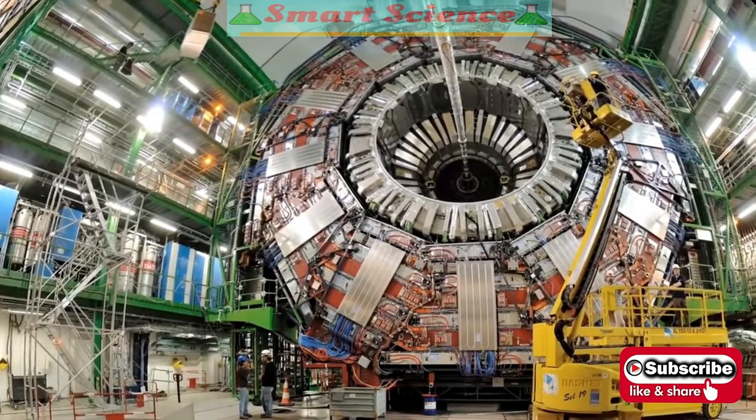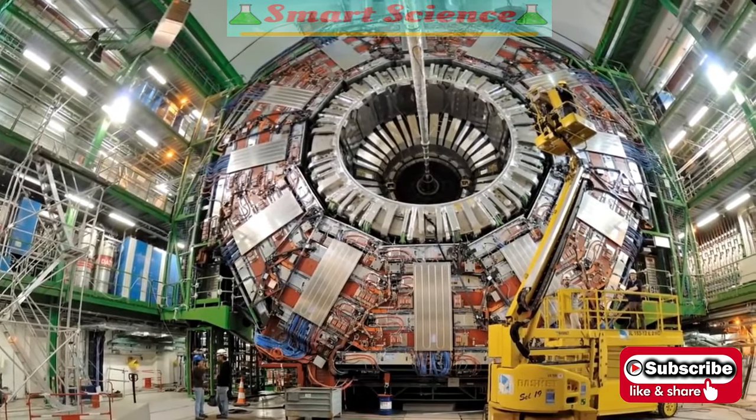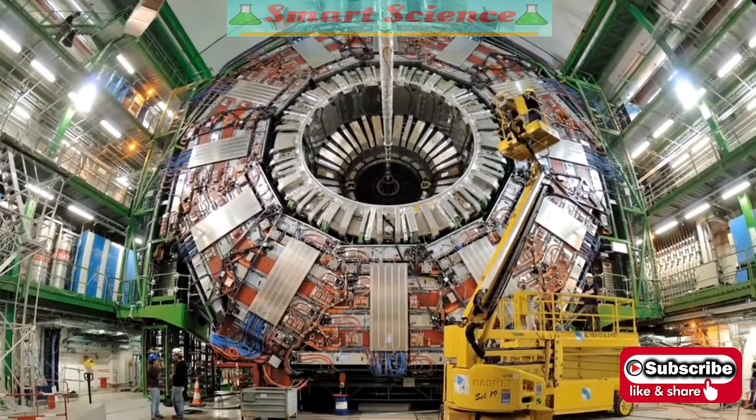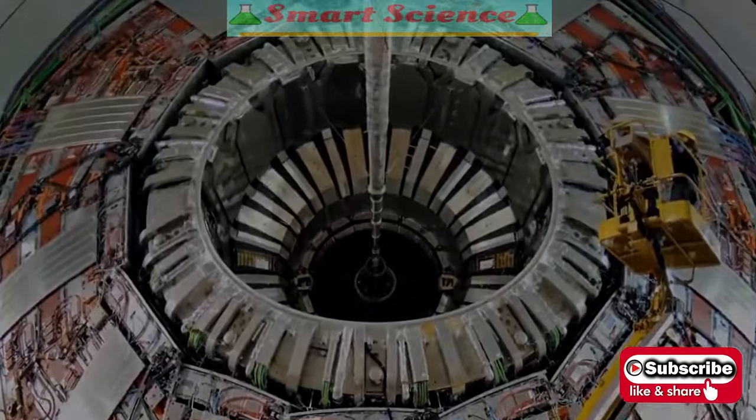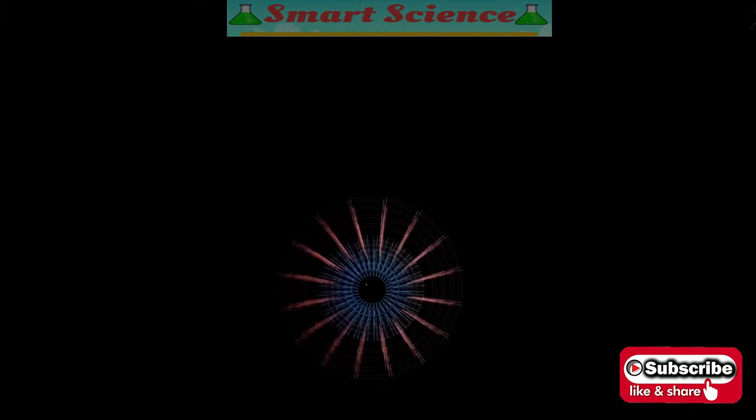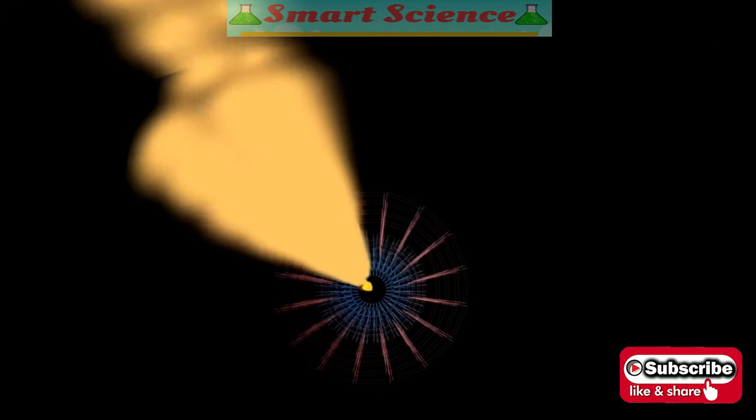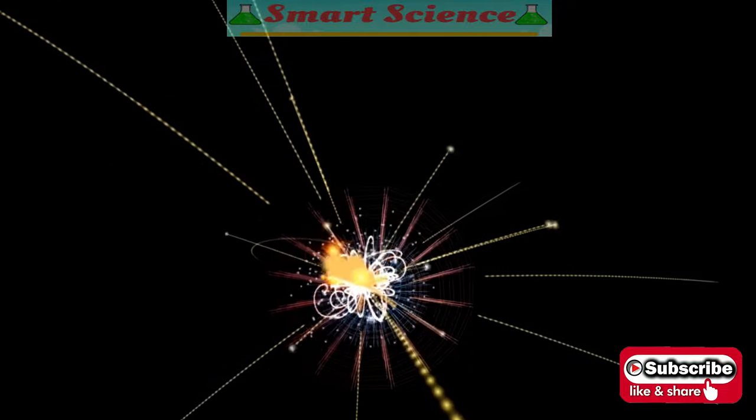The Large Hadron Collider lies in a tunnel below the border between France and Switzerland. A magnetic field 100,000 times stronger than Earth's bends the paths of charged particles emerging from high energy collisions.